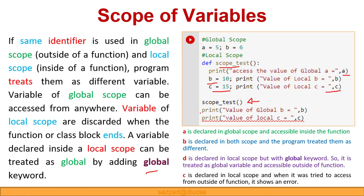We then call the function 'scope_test', which prints those three statements. After returning from the function, we print the value of 'b' — since we are outside the function, it will print the global variable 'b', which is 6. Then, since the local variable 'c' cannot be accessed outside the function block, trying to access 'c' from outside will show an error — something like 'undeclared variable' or 'name not defined'.